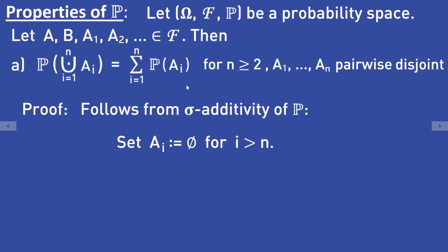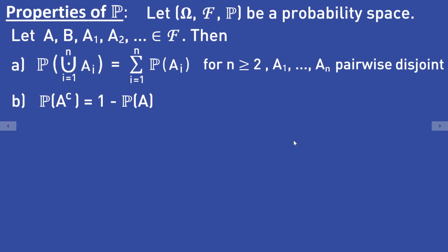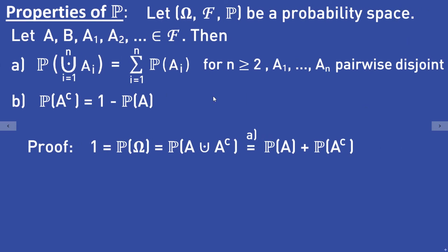Finite additivity follows directly from the sigma additivity of P — just set Ai equal to the empty set for i greater than n in the sigma additivity property. Next, the probability of the complement of A is equal to 1 minus the probability of A. This follows because 1 equals the probability of omega, which equals the probability of the union of A and its complement, and since A and its complement are disjoint, this equals the probability of A plus the probability of the complement of A.